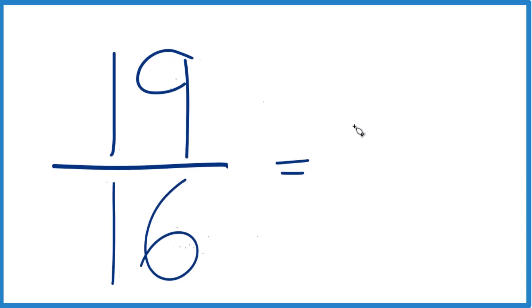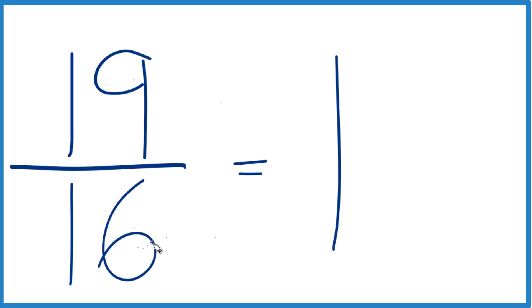16 goes into 19, 1 times 16, that's 16, and we'd have 3 left over, bring the denominator across,